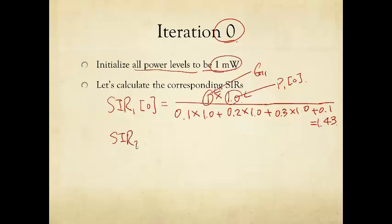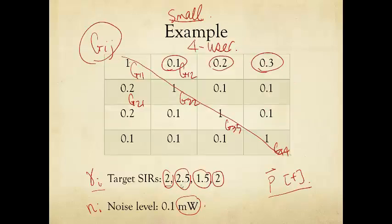Similarly, we can calculate the SIR for the second user at initialization which turns out to be 2, for the third one which turns out to be 2 as well, and the fourth one which turns out to be 2.5. If you look at these numbers at initialization and compare with the target SIRs, you see that the first user is not getting to the target SIR, neither is the second user. But the third and the fourth user are actually getting above their target SIRs. Instead of 1.5 you're getting 2 already, instead of 2 you're getting 2.5.